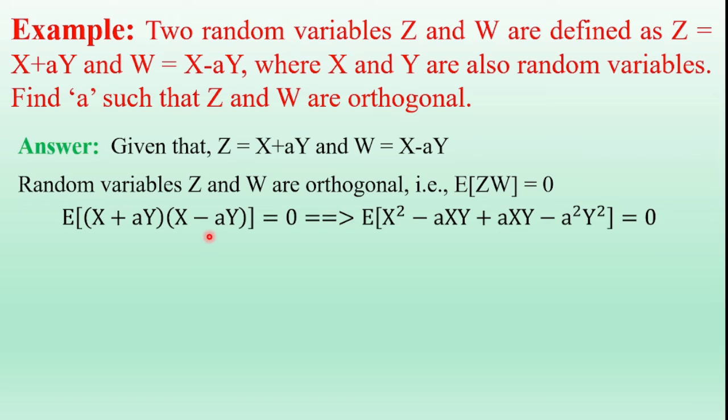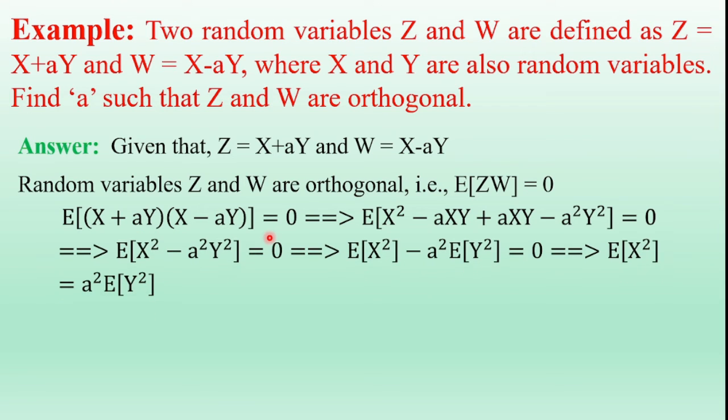So A plus B into A minus B equals A square minus B square. Using that expression, expectation of X plus aY into X minus aY is expectation of X square minus a square Y square equals zero.